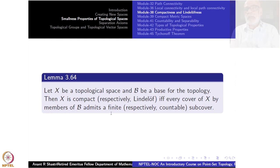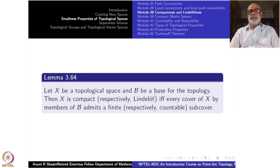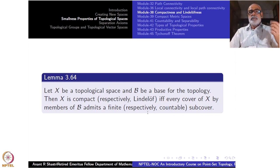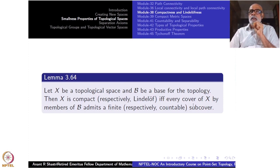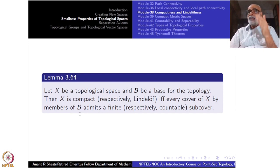Let us do this a little more carefully. Why take all open subsets? Let us see whether we can be more economical. Suppose B is a base for the topology. Then X is compact or Lindelof respectively if and only if every cover of X by members of B admits a finite sub-cover or a countable sub-cover respectively. If that is true for all subfamilies of B itself, then it will be true for all open covers.